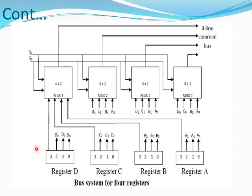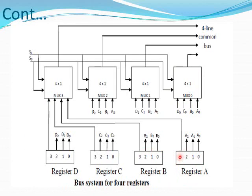If each register has N bits, then N multiplexers are required. Here, since each register has 4 bits, we use 4 multiplexers. If a register has 8 bits, we use 8 multiplexers. In general, for N-bit registers, N multiplexers are required.